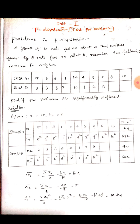The given problem: a group of 10 rats fed on diet A, another group of 8 rats fed on diet B, according to the following increase in weight — diet A and diet B.